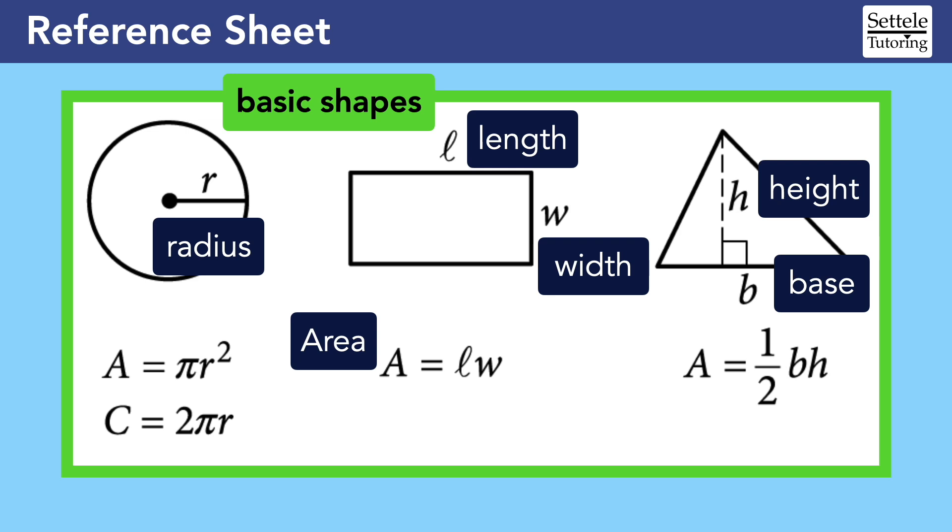The reference sheet also gives us the formula for the circumference of the circle, which you should remember is the outside distance around the circle. For other shapes, we would simply call this outside distance the perimeter, but circles are unique, so they get unique vocabulary. Notice that we do not get formulas for the perimeters of the other shapes.